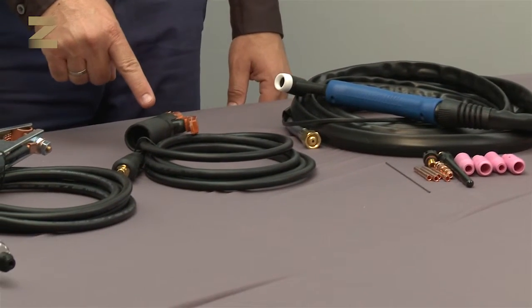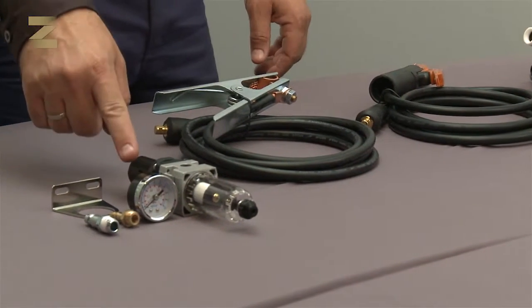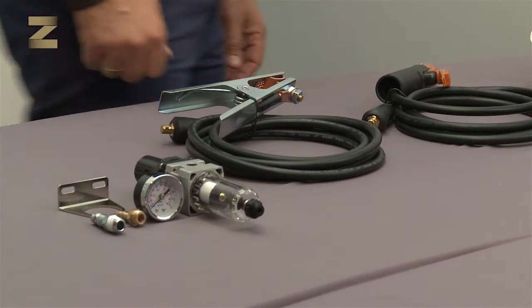It also includes a handle and cable for electrode welding, an earth clamp and 1.5 meter cable, and a pressure gauge for installation at the back of the machine.